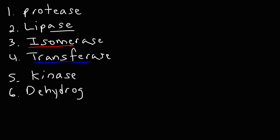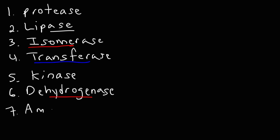Dehydrogenase — think of the prefix "de-" and the word "hydrogen" — is an enzyme that removes hydrogen atoms from a molecule. Amylase relates to starches such as amylose and amylopectin; plant starch is composed of roughly 20% amylose and 80% amylopectin. Amylase is an enzyme that breaks down starch into simple sugars like glucose.